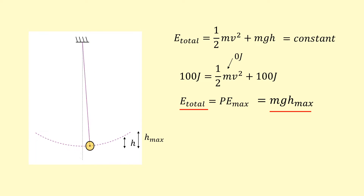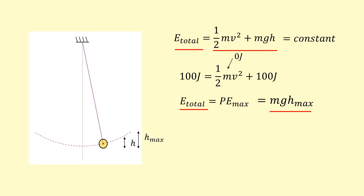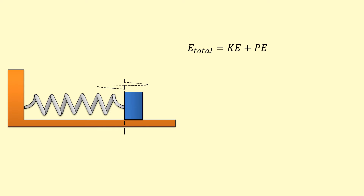So we now have two equations for total energy: one using the maximum kinetic energy and one using the maximum gravitational potential energy. You can jump back and forth between these equations depending on the given conditions. The same is true for a mass-on-a-spring system. The kinetic energy is ½mv², but instead of gravitational potential energy, we have elastic potential energy, written as ½kx², where k is the spring constant and x is the extension or displacement from equilibrium. The total energy at any point must be constant.